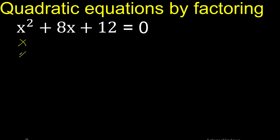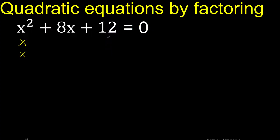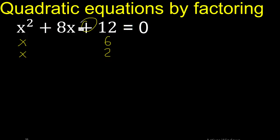x multiplied by x is x squared. We need 2 numbers that multiply to 12. 4 multiplied by 3 is 12, and 6 multiplied by 2 is 12.